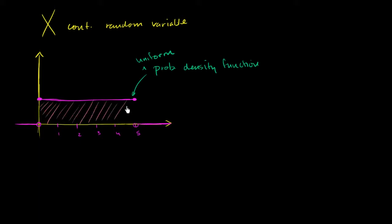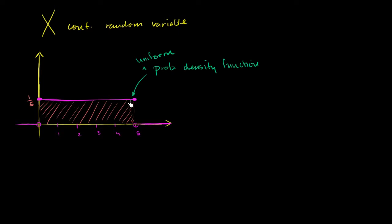For this random variable, in order for this to be a legitimate probability density function, the area highlighted in orange needs to equal 1. Given that the base is of length 5, what does the height need to be? 5 times what equals 1? 5 times its reciprocal. So we have a uniform density of 1/5.